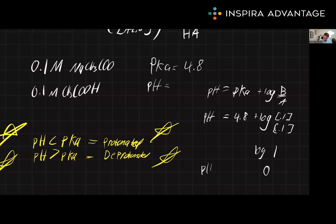So now we have our pH equals our pKa of 4.8 plus 0. Well, that's the easiest math you're going to do all day. Our pH is equal to 4.8.